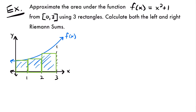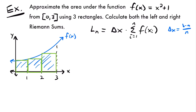The formula for finding the area using left endpoints is L sub n equals delta x times the sum from i equals 1 to n of f of x sub i. Delta x still equals b minus a divided by n. Our interval and number of rectangles haven't changed — a is still 0, b is still 3, and n is 3 — so delta x is still equal to 1.